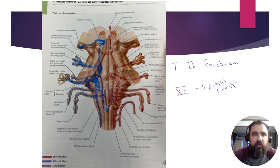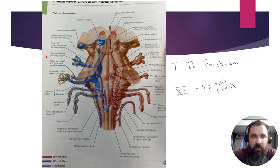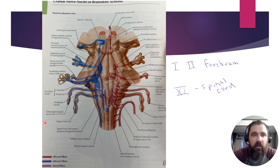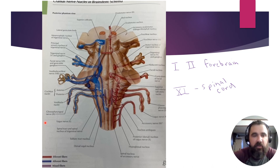Cranial nerves three through ten and twelve synapse in the brainstem. Some are motor, some are sensory, and some have both motor and sensory fibers. In blue on the left are afferent fibers — coming into the spinal cord bringing sensory information — including somatic sensation from the face through the trigeminal nerve branches V1, V2, and V3, and taste information from cranial nerves seven, nine, and ten.